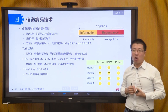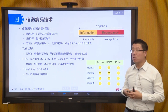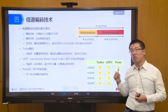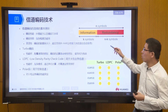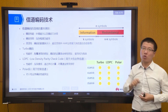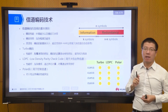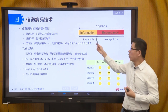Channel coding is also called error correction code. When transmitting signals through wireless channels, there will be various kinds of interference. To recover the original signal at the receiving end, we insert redundant bit information to enhance the correlation between bits. At the receiving end, we decode using the corresponding code to obtain the original information — even if some bits have errors, the redundant bits allow us to restore the original data.